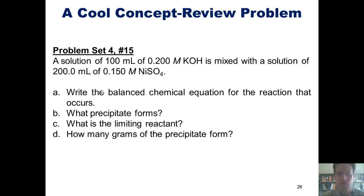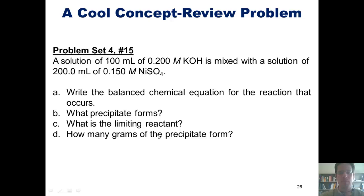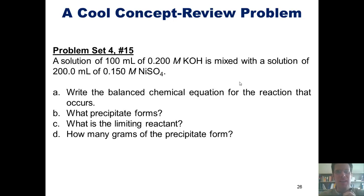A solution of 100 milliliters of 0.200 molar KOH is mixed with a solution of 200 milliliters of 0.150 molar nickel sulfate. Questions: A. Write the balanced chemical equation for the reaction that occurs. B. What precipitate forms? C. What is the limiting reactant? D. How many grams of the precipitate form? That brings us to the end of our Chapter 4 coverage of reactions in aqueous solution. Feel free to take a break, and I look forward to seeing you in the next video lecture covering Chapter 5. Have an enjoyable rest of your day.